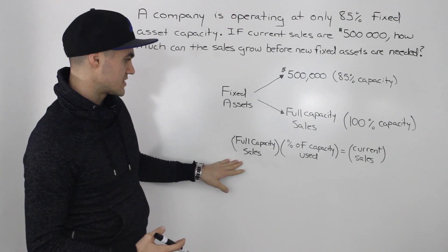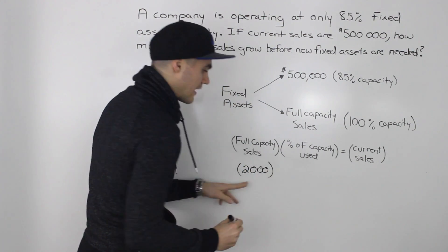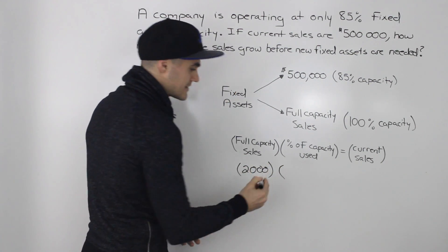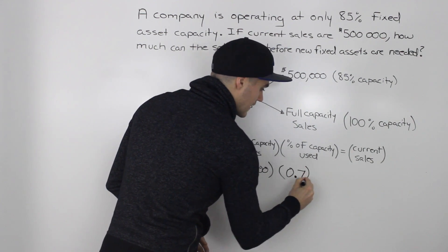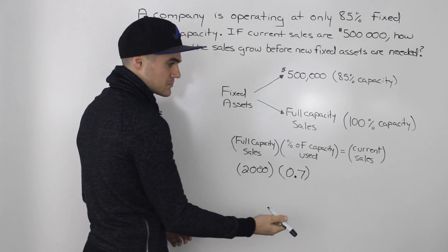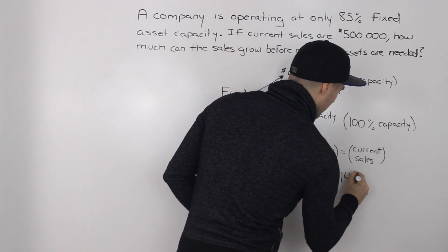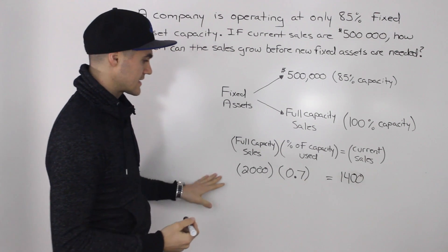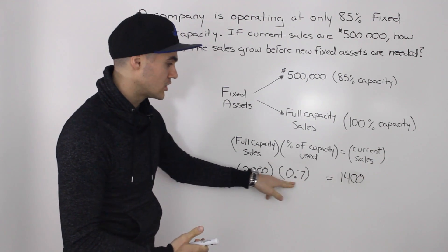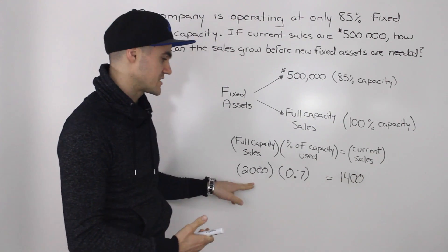Let's forget about this example for a second. Say you have assets with the potential to generate $2,000 worth of sales and you're only using them at 70% of their capacity, so you put 0.7 here — this bracket always has to be in decimals. So 2,000 times 0.7 gives us current sales of $1,400. Your fixed assets have the capacity to generate $2,000 but if they're only used at 70%, they're currently only generating $1,400.